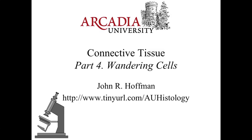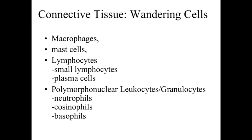Hello and welcome to Arcadia University's BI-327 Histology lecture on connective tissue. This is part four, where we're going to talk about wandering cells within the connective tissue. Within the connective tissue, the overall characteristic is that cells are widely scattered with extracellular matrix between them. We've got the resident cells like the fibroblasts, which we talked about in the previous mini lecture, and now we're going to talk about some wandering cells — cells that are commonly found within the connective tissue but are not always there, moving through the body and responding to a variety of local signals.